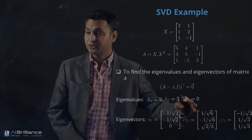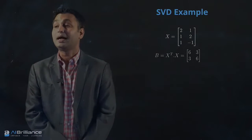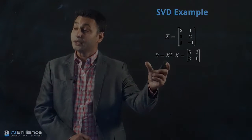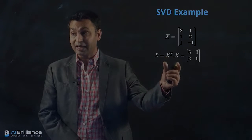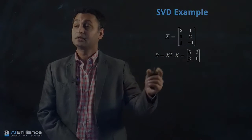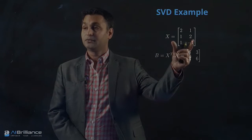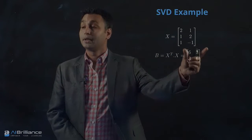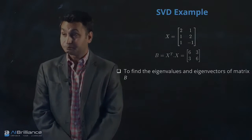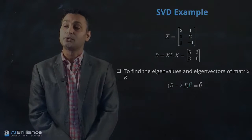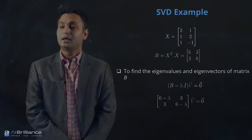Corresponding to each of the eigenvalues, we have corresponding eigenvectors. Now we can take X and create a matrix B, where we have reversed the order of matrix multiplication — we are using X transpose times X, not X times X transpose. So if you reverse this order and do this multiplication, we call that matrix B. Then we solve the eigenvalue problem for matrix B and find out the eigenvalues and eigenvectors.